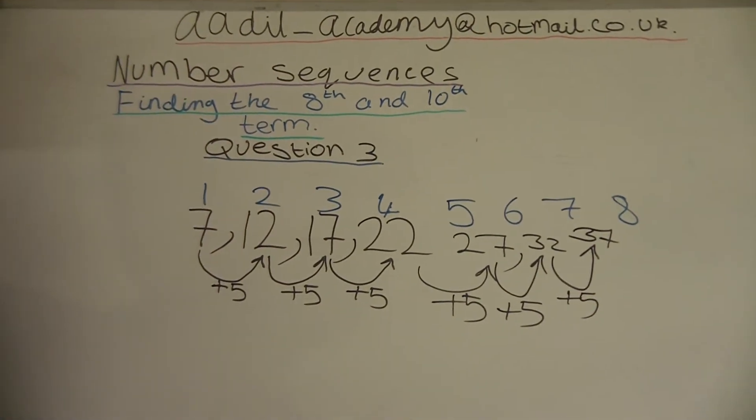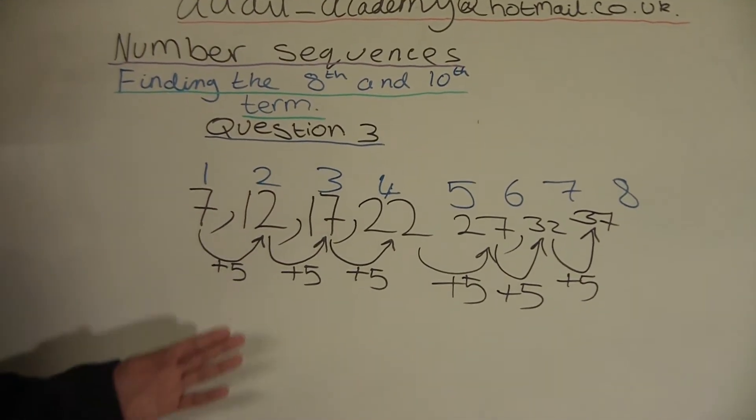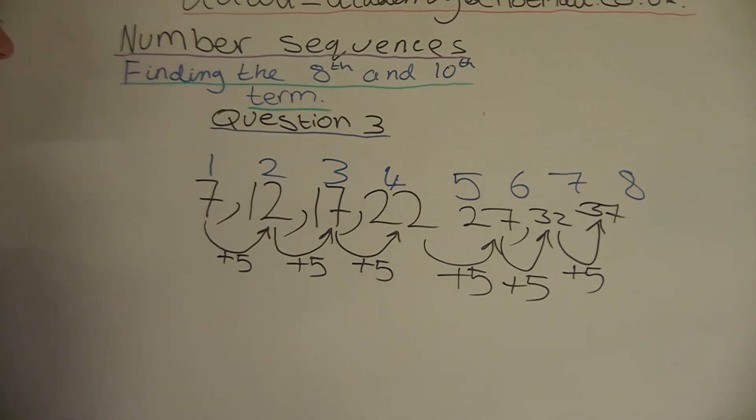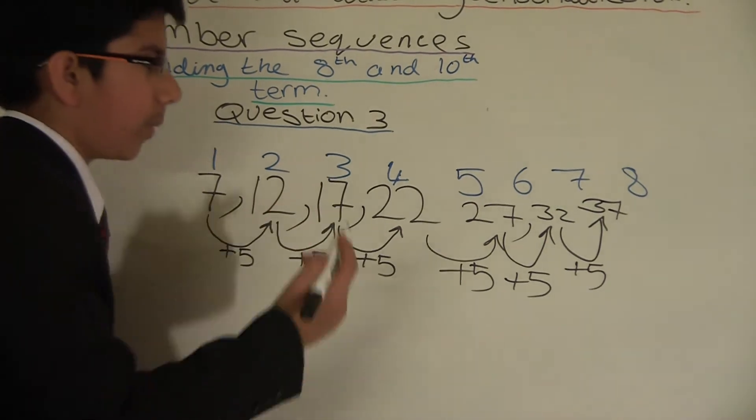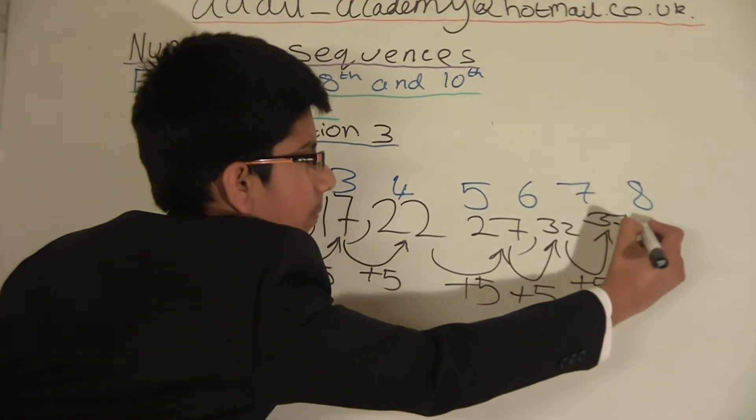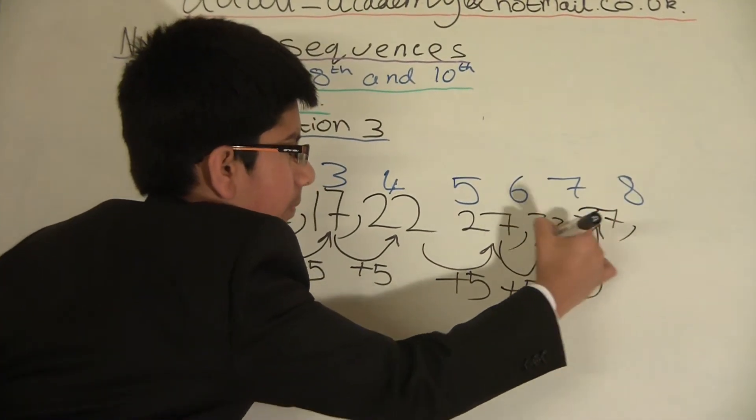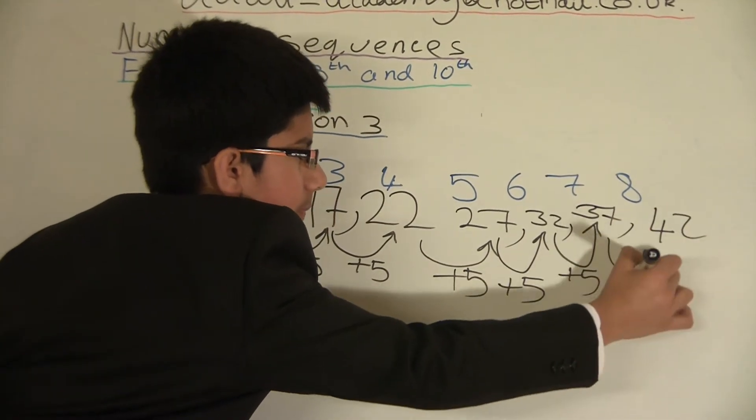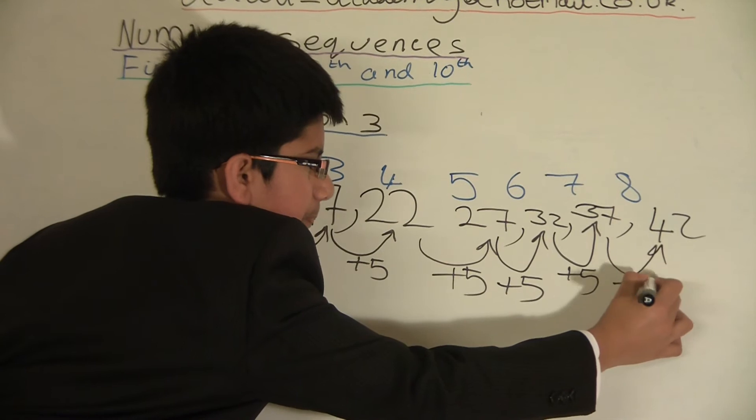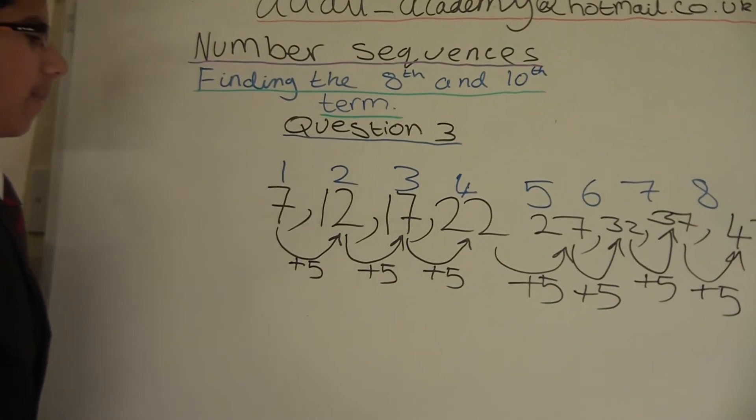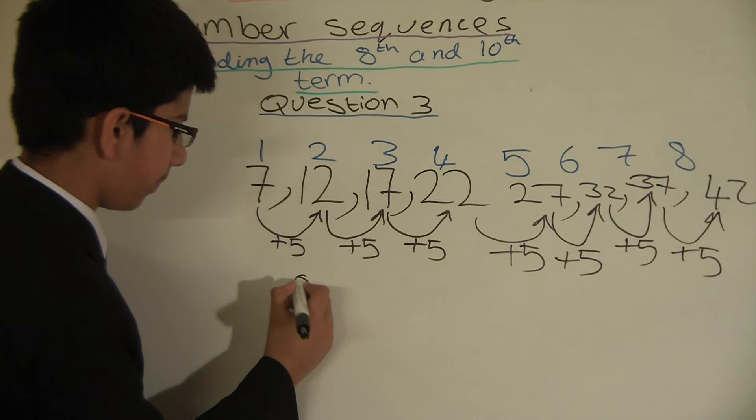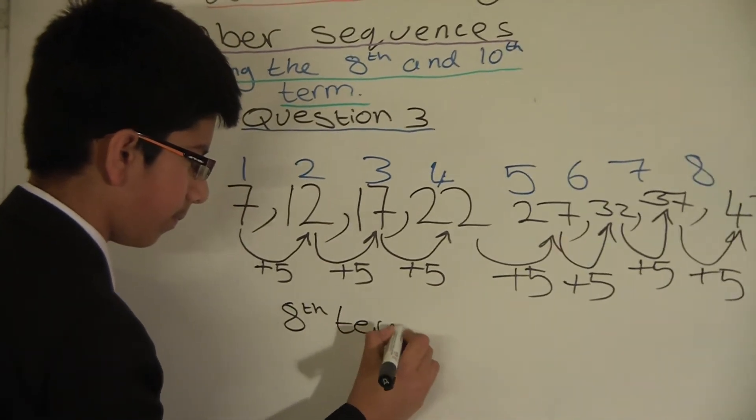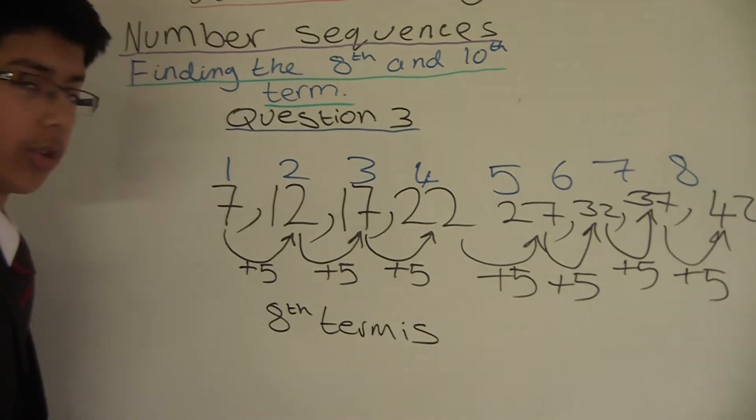And to get our 8th position, which we have to find, which is our question today, we will add 5 again, which equals 42. So our 8th term is 42.